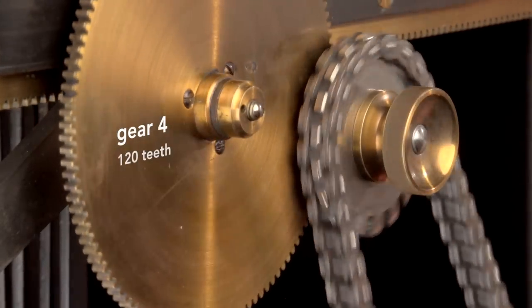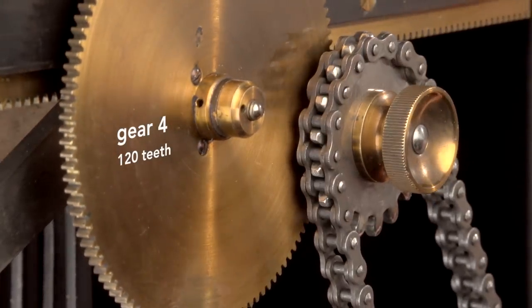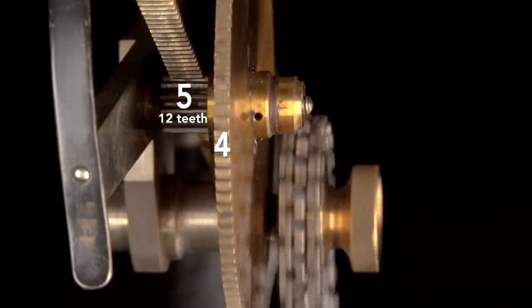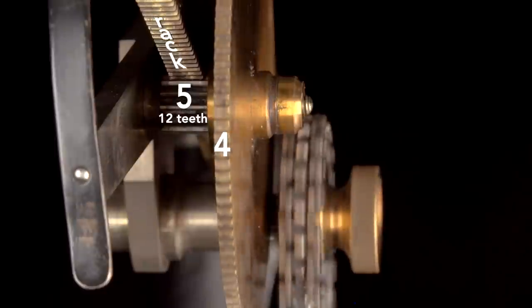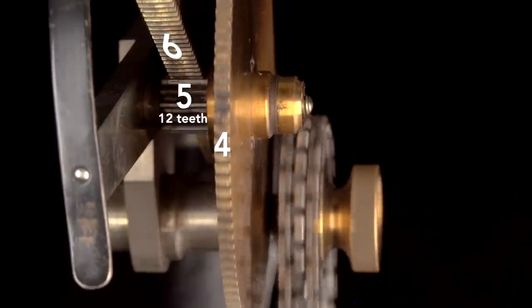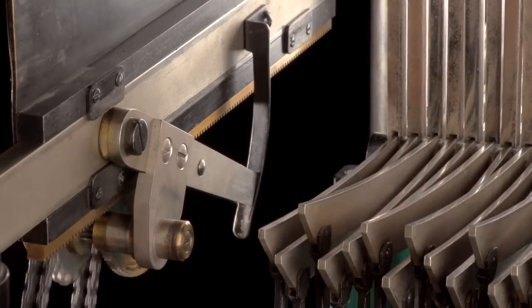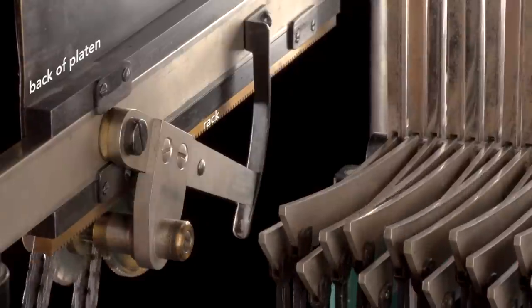This fourth gear has 120 teeth. Behind and attached to the fourth gear is the fifth gear. This gear has 12 teeth and engages the rack, which is the sixth gear. You can see from the back how the rack runs the full length of the platen.